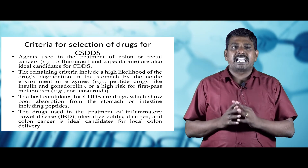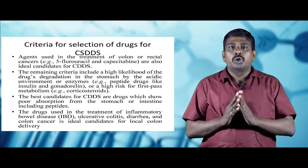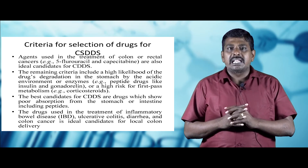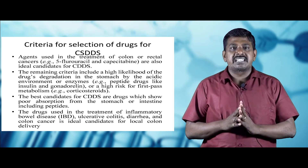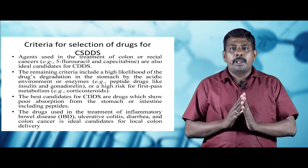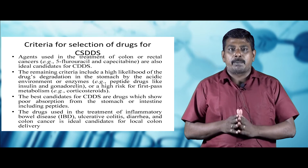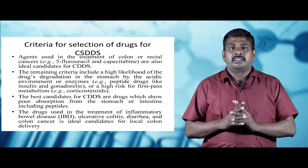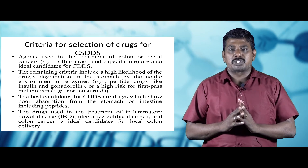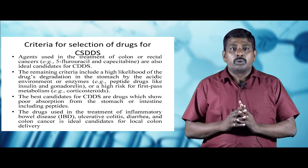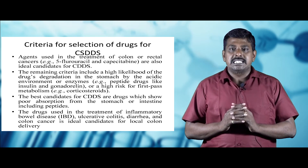Agents used in the treatment of colon or rectal cancer, such as 5-fluorouracil and capecitabine, are ideal candidates. Other criteria include a high likelihood of drug degradation in the stomach by the acidic environment or enzymes — for example, peptide drugs like insulin and gonadorelin — and a high risk for first-pass metabolism, as seen with corticosteroids. The best candidates also include drugs which show poor absorption from the stomach or intestine, including peptides.